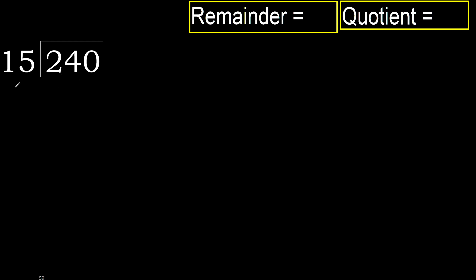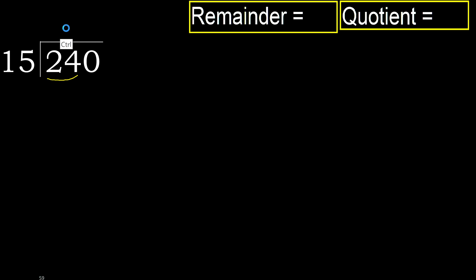240 divided by 15. 2 is less, therefore next: 24. 24 is not less. 15 multiplied by which number is nearest to 24 but not greater? 15 multiplied by 3 is 45, greater. Multiplied by 2 is 30, greater. Multiplied by 1 is 15, not greater. 24 minus 15 is 9.